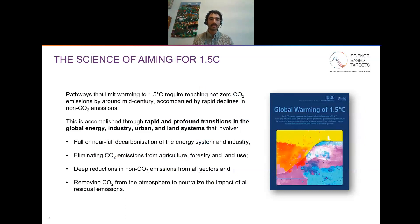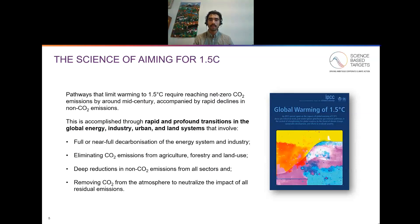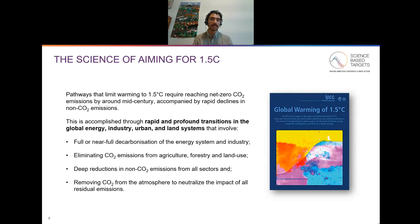The special report on global warming of one and a half degrees makes clear that there are a variety of pathways that could limit warming to one and a half degrees, but almost all of them require reaching net zero CO2 emissions by mid-century, accompanied by rapid declines in non-CO2 greenhouse gas emissions. This is accomplished through rapid and profound transitions in the global energy, industry, urban, and land systems that involve full or near full decarbonization of the energy system and industry, eliminating CO2 emissions from agriculture, forestry, and land use, deep reductions in non-CO2 emissions from all sectors, and removing carbon dioxide from the atmosphere to neutralize the impact of all residual emissions, and in some cases bring atmospheric concentrations of CO2 back down.